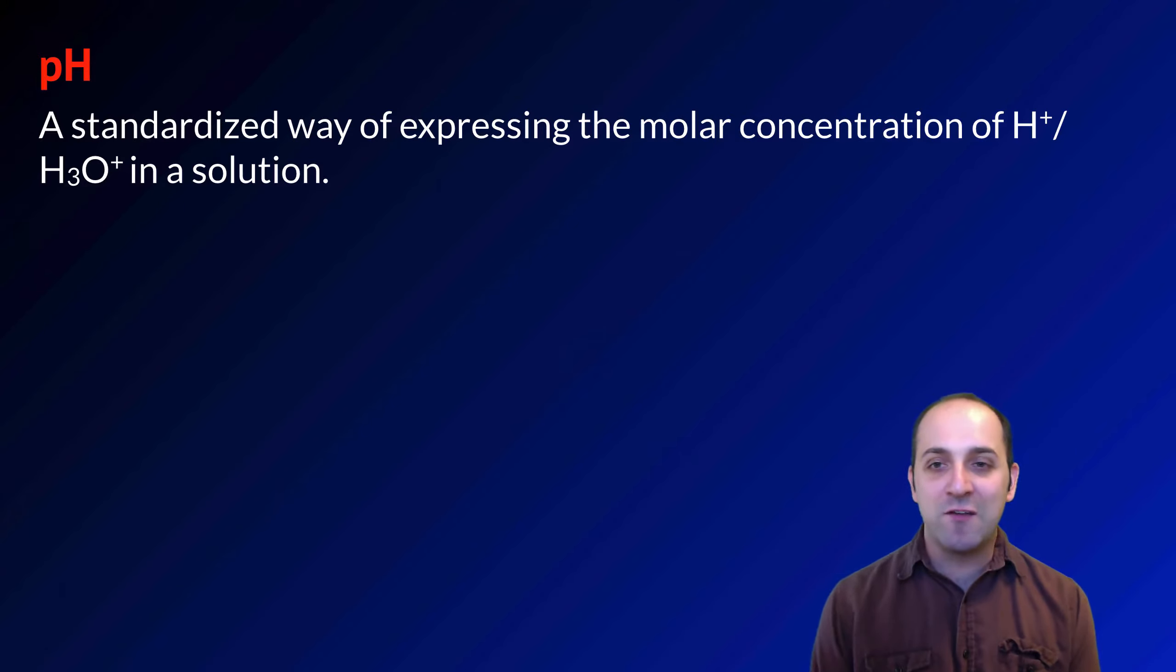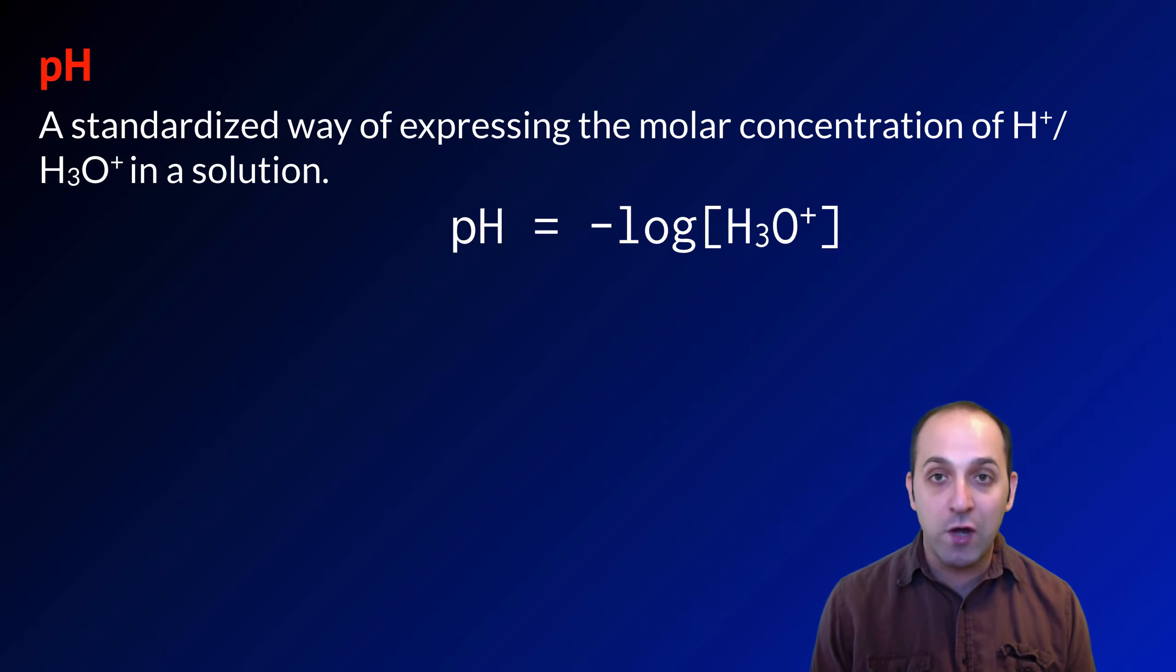pH is just a standardized way of expressing the concentration of H-plus in a solution. It's defined as the negative log of the hydronium ion concentration in a solution. Another way to put this is that the molar concentration of hydronium ions or protons in a solution is equal to 10 to the negative pH.